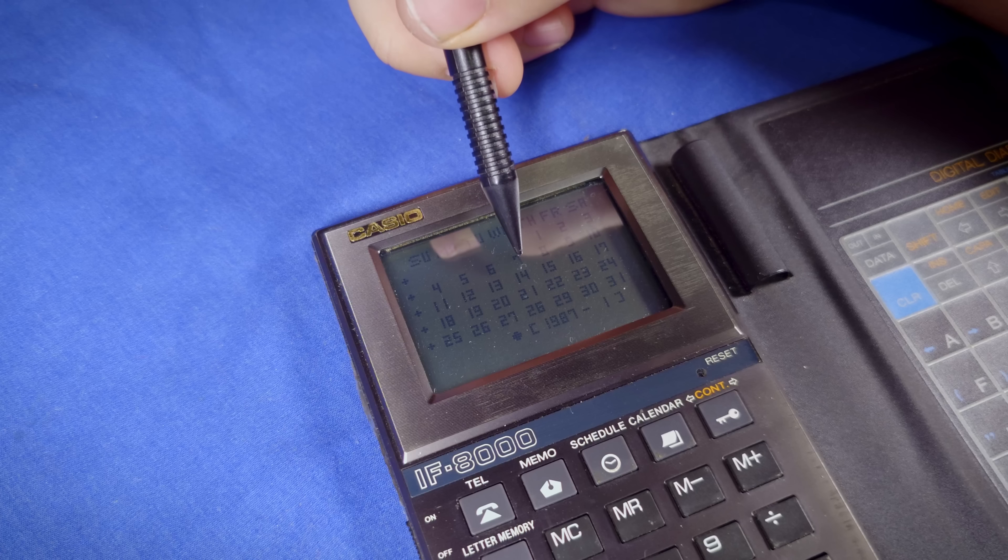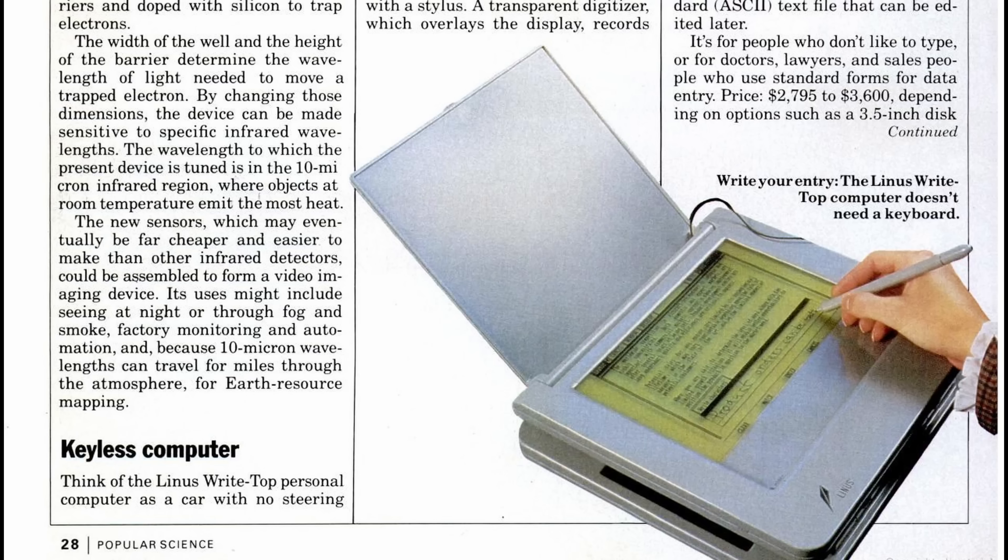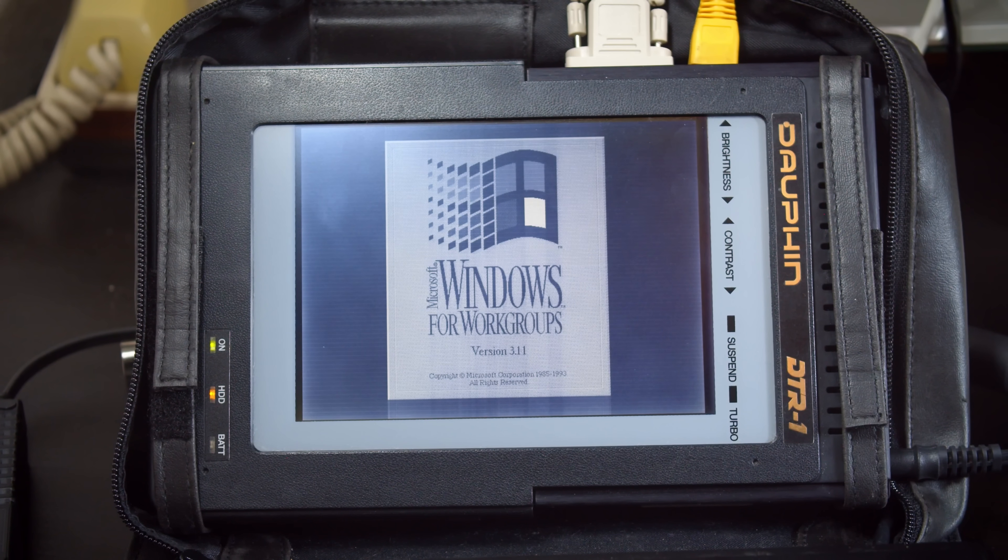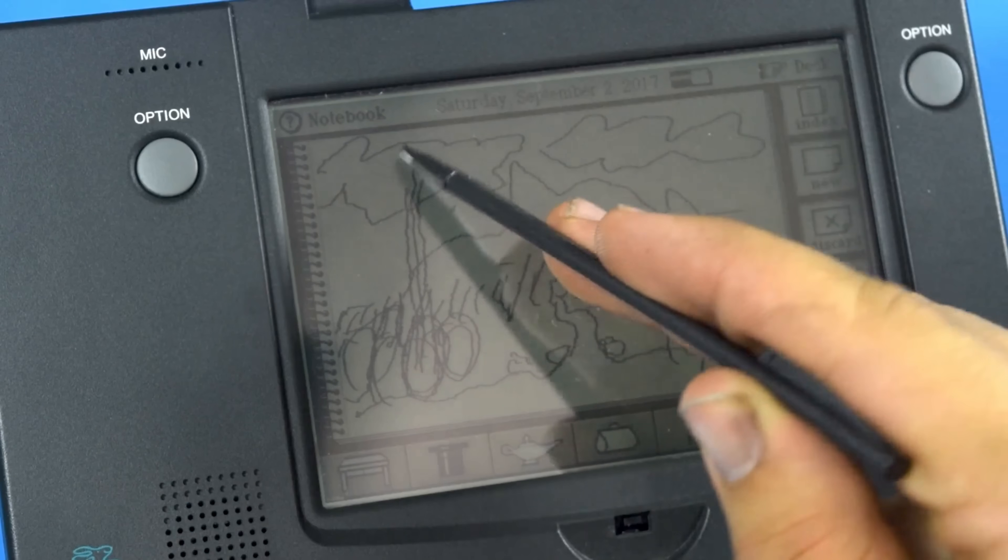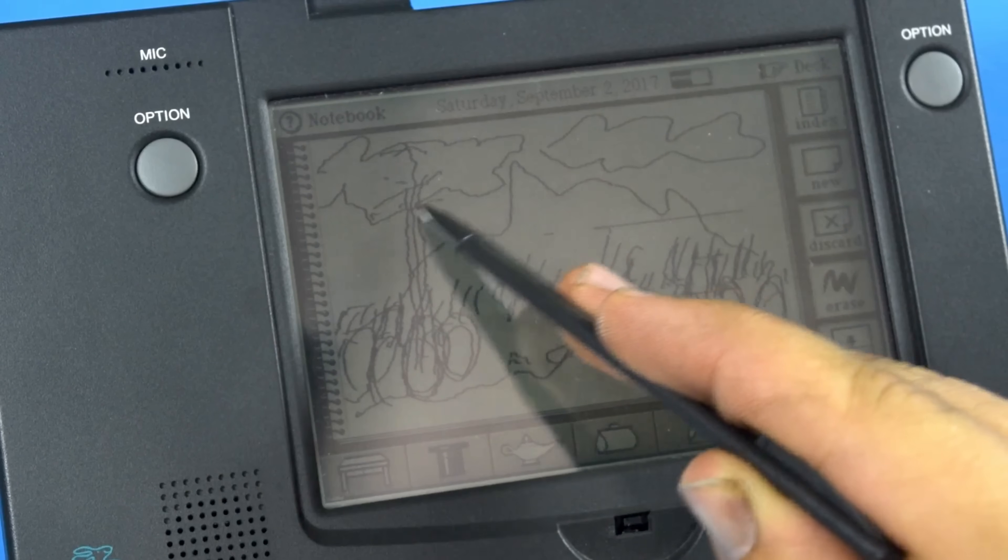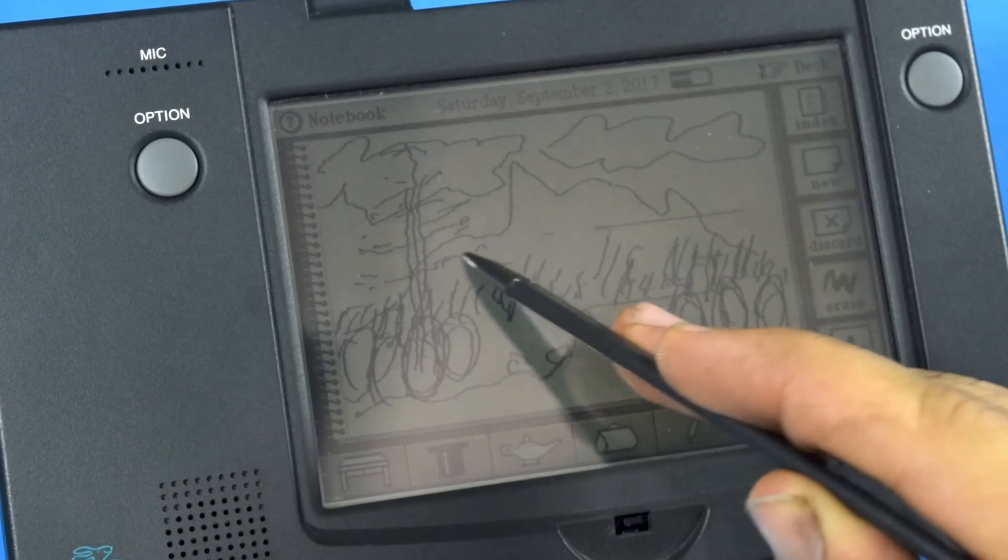There were a number of other true touchscreen devices after this, like the Linus Wrighttop in 1988, the Apple Newton and Dauphin DTR1 in 1993, and the 1994 Magic Cap devices, which I have a video about from forever ago if you want to see another truly revolutionary device.